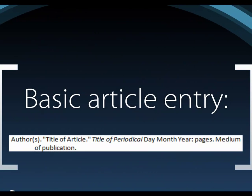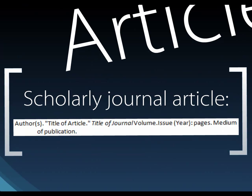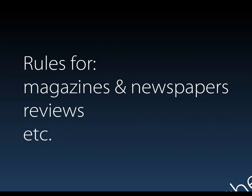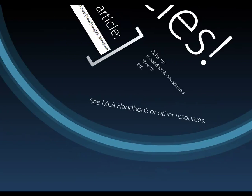Citing articles is done slightly differently in your Works Cited list. A basic article entry includes the author's last name first and then first name, the title of the article, the title of the periodical, and then the date information and medium of publication. If you're citing from a scholarly journal article, make sure to include the volume and issue numbers as well. There are also rules for magazines, newspapers, and reviews found in periodicals, so be sure to consult the MLA handbook or other resources.